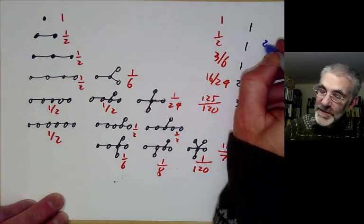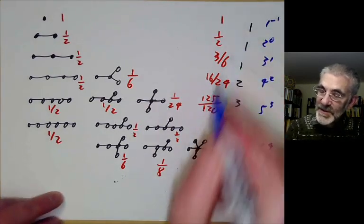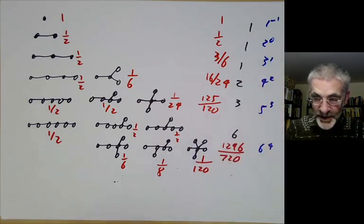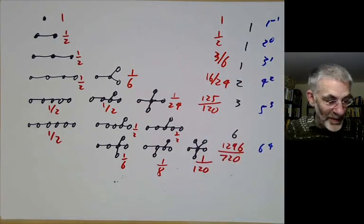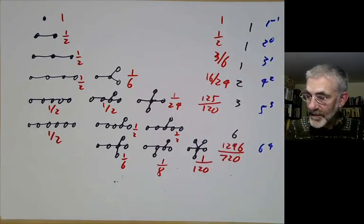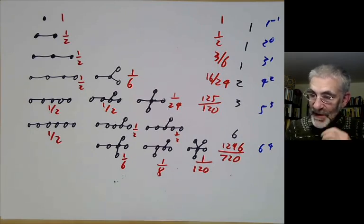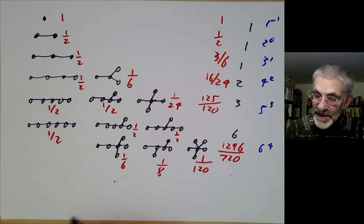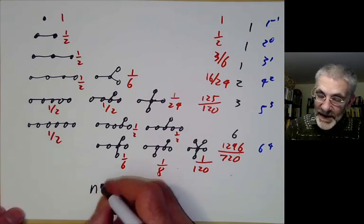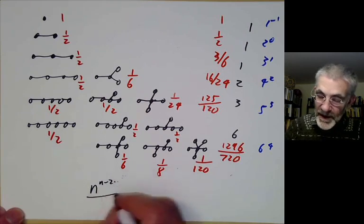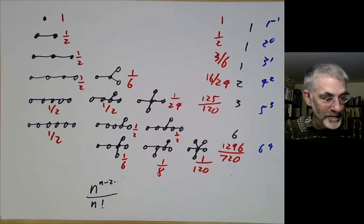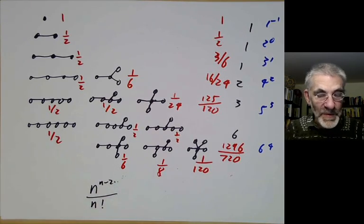3 to the 1, 2 to the 0, and I guess 1 to the minus 1 as the denominators. Now you can see what the pattern is. The number of trees on n points seems to be n to the n minus 2 over n factorial. That's if you count them as weighted trees.